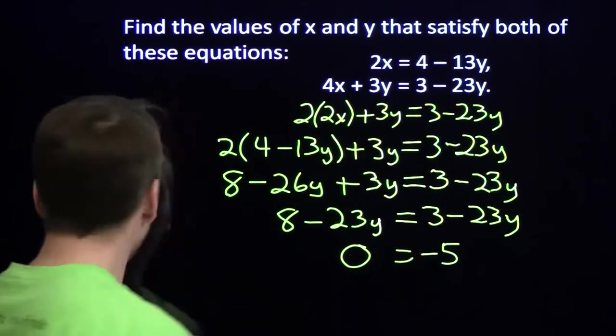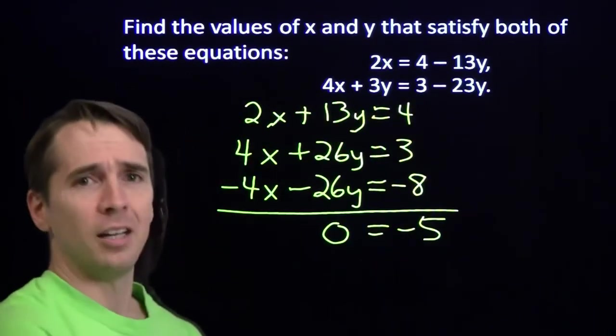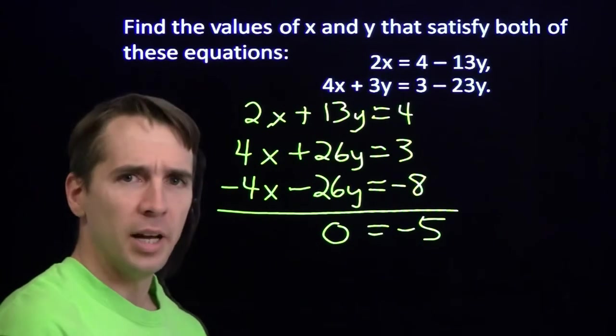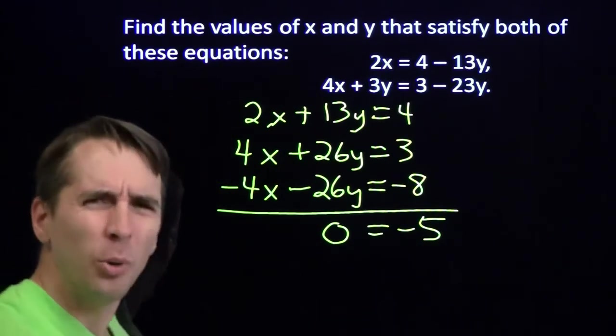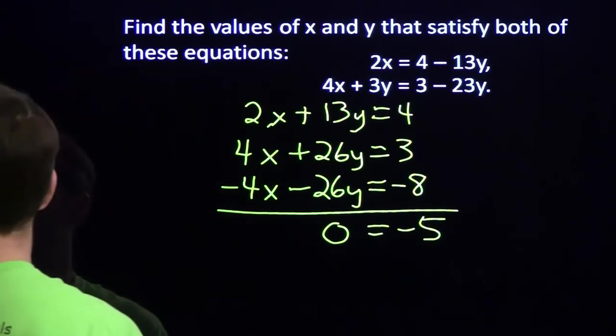I mean, it wasn't negative 5 back here. It's not negative 5 here. 0 is not negative 5. What's going on? I'm so confused. Alright.